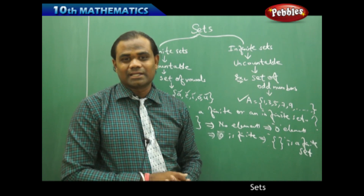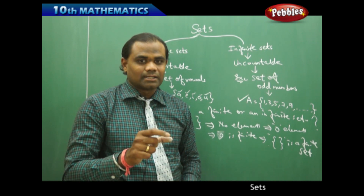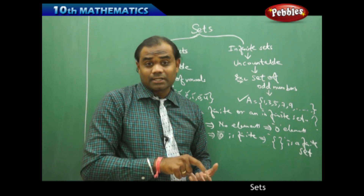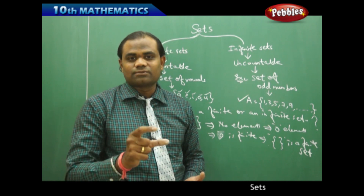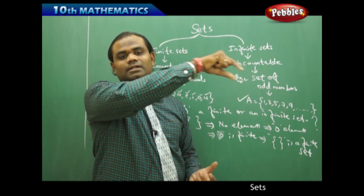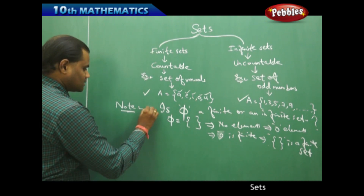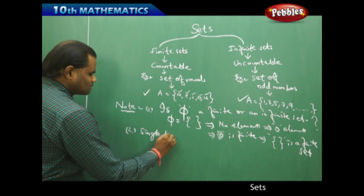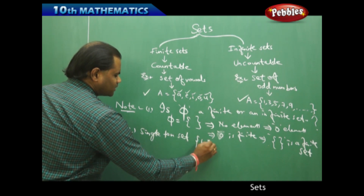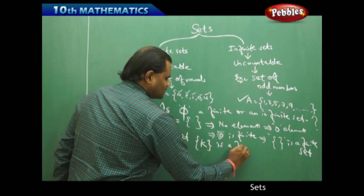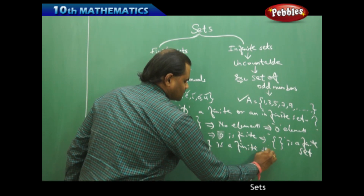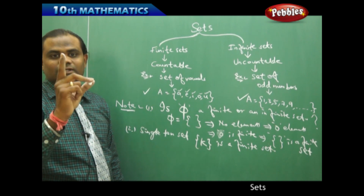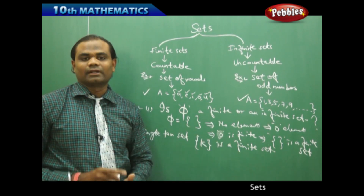Similarly, consider the singleton set. A singleton set has only one element. The number of elements in the singleton set is one, and one is a finite number. Therefore, the singleton set is a finite set.